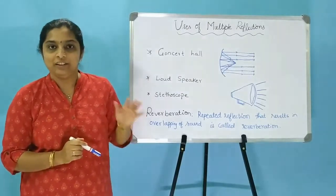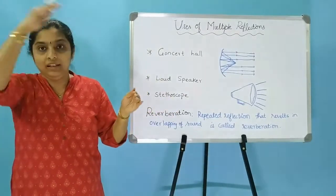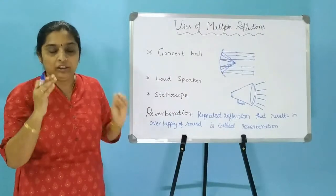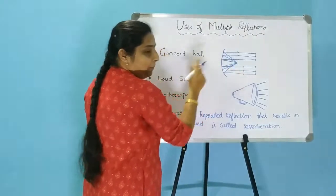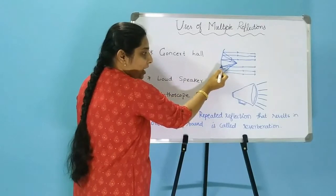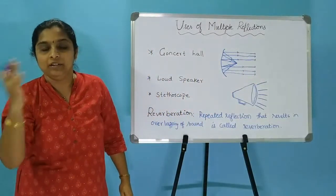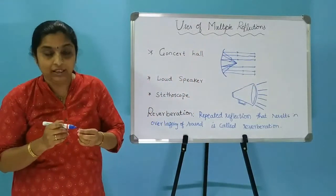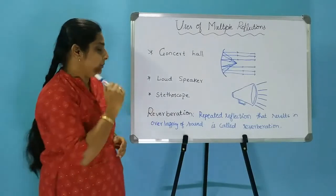Let us look at the uses of multiple reflection. In concert halls, cinemas, and large auditoriums, the ceiling is always curved or arched. They are arched so that sound reaches all corners of the auditorium. Sound originates from one point, travels upward, hits the arch, and gets reflected back in all directions, reaching every corner of the hall. Some auditoriums also use a sound board to reflect sound in all directions.